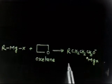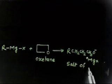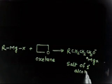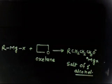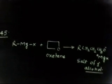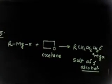So you are getting your primary alcohol. Let's call this a salt of primary alcohol. Grignard reagent reacts with oxetane to give a salt of a primary alcohol.